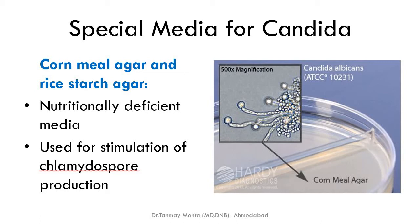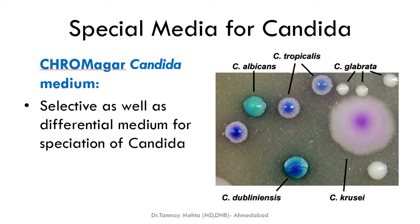Special fungal culture media include cornmeal agar and rice starch agar for Candida detection — these are nutritionally deficient media that stimulate chlamydospore formation, helping in species identification of Candida. Chrome agar gives different colored colonies depending on which fungus is growing and is especially used for speciation of Candida.